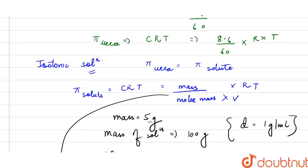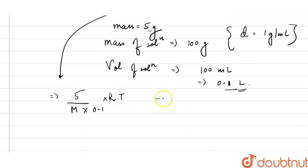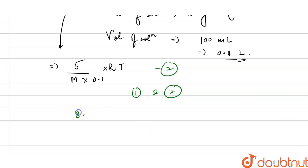As it is given the solutions are isotonic, so we can equate 1 and 2. After equating 1 and 2 it comes out to be 8.6 divided by 60 into RT and this I could write as 50 upon M into RT. RT will cancel.